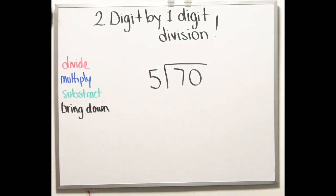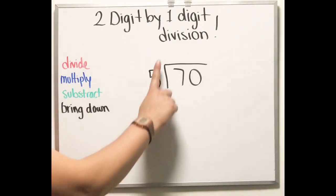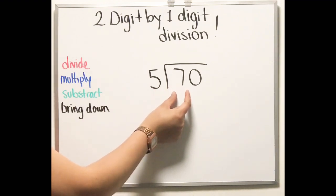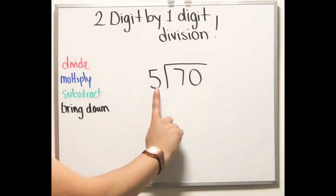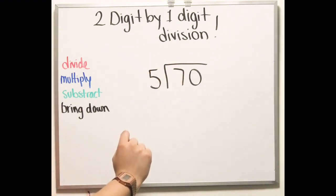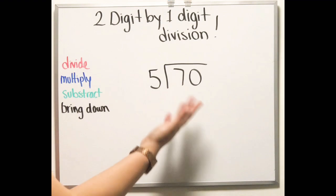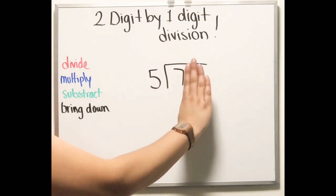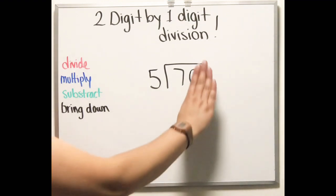Now let's try a different one. I changed the divisor here, so now we have 70 divided by 5. We need to see how many times can 5 go into the 7. Notice I'm not using 70 right away — I'm using the first digit first. How many times can 5 go into 7? We're working only with the 7, not the zero.